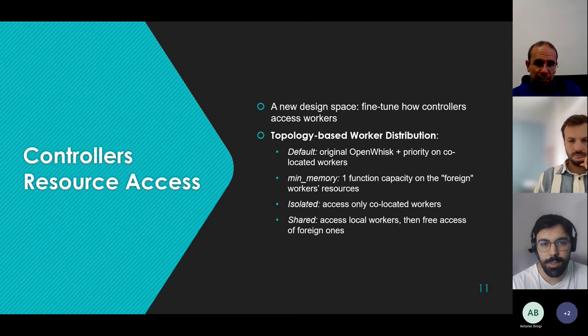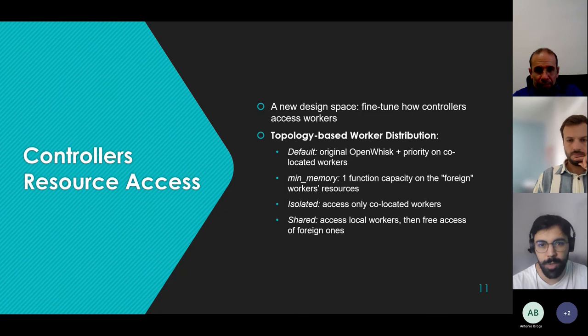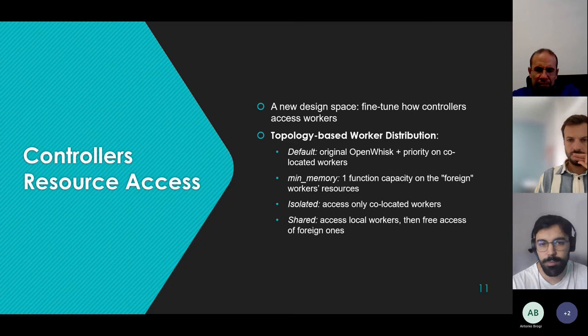We added worker distribution policies at the deployment level of OpenWhisk — controlling how much a controller can access workers in other zones. We have four policies: 'default' is the original OpenWhisk policy where a controller has access to a fraction of resources from all workers; 'priority' gives preference to co-located workers in the same zone first; 'memory' gives access to foreign workers for only one function at a time; 'isolated' restricts controllers to only use workers in the same zone; and 'shared' is free access to all workers.